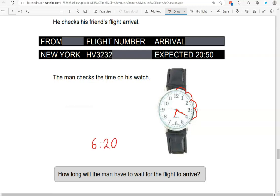And the flight is expected at 20:50. So I'm going to convert this to 24-hour format. So 12 and 6, that is 18, 18:20.